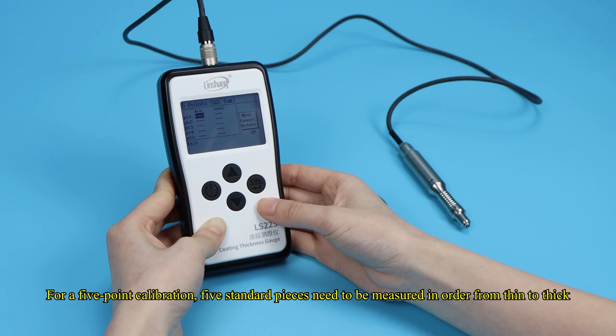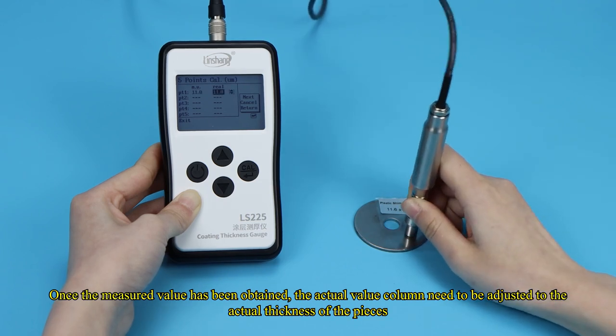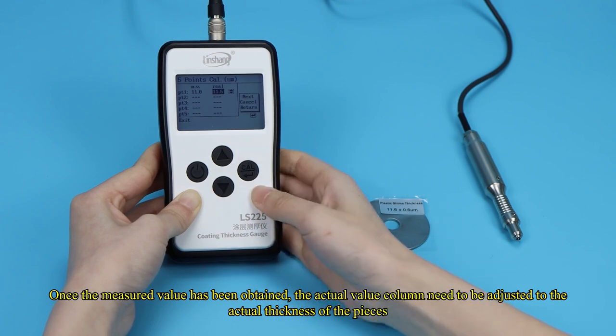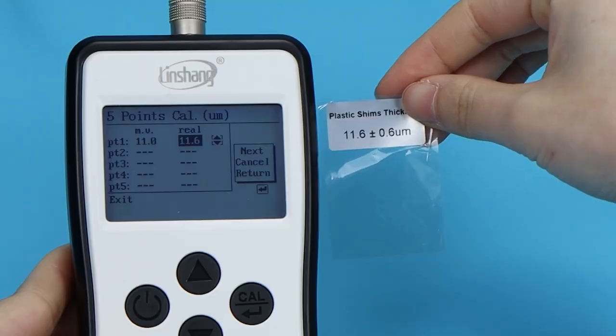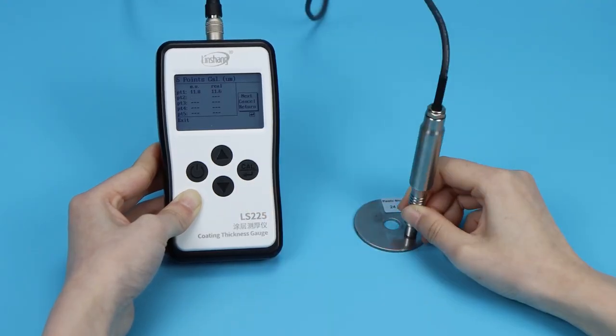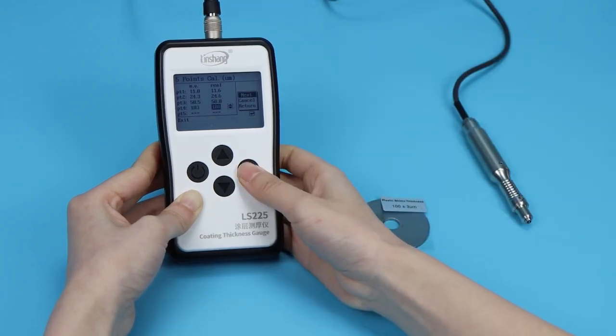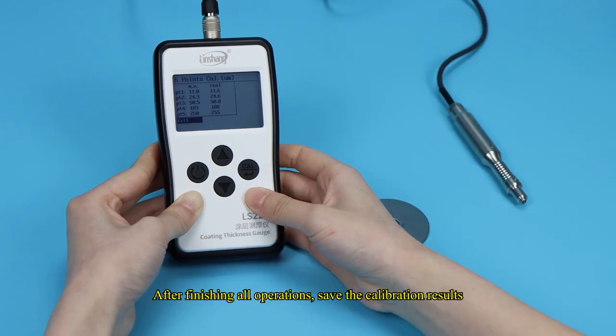For a five-point calibration, five standard pieces need to be measured in order from thin to thick. Once the measured value has been obtained, the actual value column needs to be adjusted to the actual thickness of the pieces. After finishing all operations, save the calibration results.